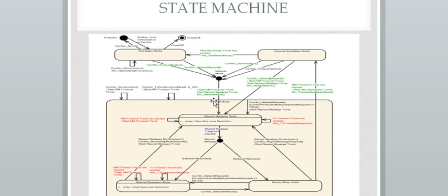Once it enters into requested mode, the first state is the Repeat Message State. Whenever it enters the Repeat Message State, the NM timeout timer will be started, after which the Repeat Message Timer will be started. CAN-NM will also inform the NM module that it has entered network mode by calling NM_NetworkMode API. In the Repeat Message State, the bus load reduction mechanism will be stopped. The NM timeout timer runs in parallel; once it expires, the timer will be restarted in the Repeat Message State.